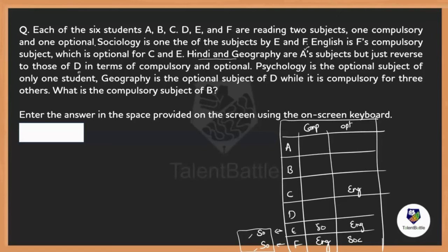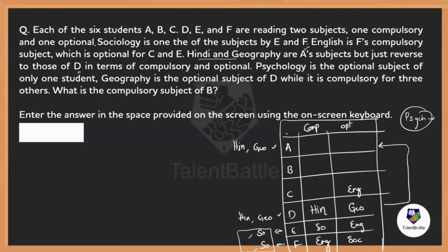A and D both read Hindi and Geography. Geography is the optional subject of D, so D's compulsory subject is Hindi. Since A and D are reversed, A's compulsory subject is Geography and A's optional subject is Hindi. Psychology is the optional subject of only one student — we'll confirm who later.